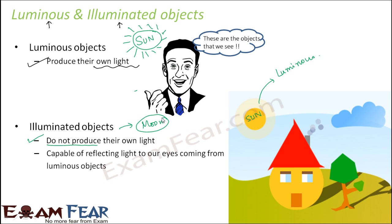In daily life, light is produced by the sun, but why are you able to see a house? Because the house is able to reflect light — the house is not producing any light. Similarly, why are you able to see a tree? Because the tree is able to reflect light; it is not producing any light of its own.